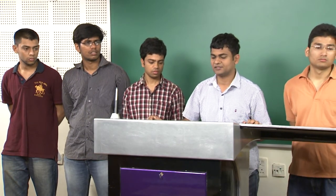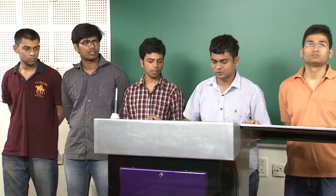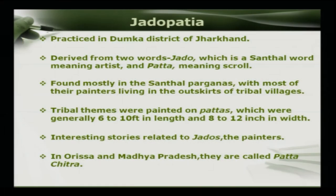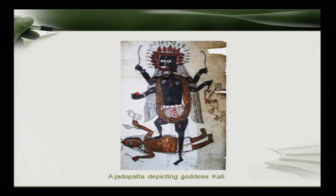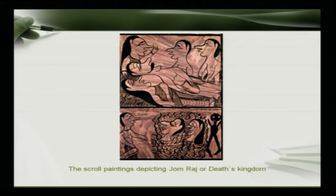In Odisha and Madhya Pradesh regions, the Jadopatia art is also called Patta Chitra. For example, in this painting we can see a depiction of Lord Kali on a scroll, and in the next we can see a painting which depicts death and destruction.